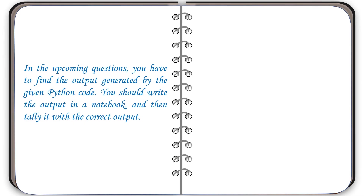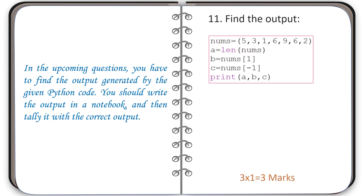In the upcoming questions, you have to find the output generated by the given Python code. You should write the output in a notebook and then tally it with the correct output. Question number 11: code is given and you have to find the output. The correct output is shown on screen.